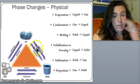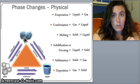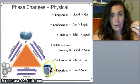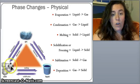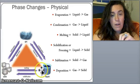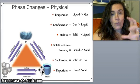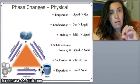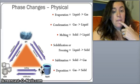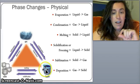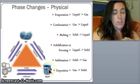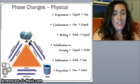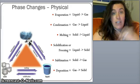Anytime you are going through the phase change pyramid, you're only doing a physical change — you're only changing the physical appearance of that substance. Matter is going through phases all the time, and the way you get through the pyramid is by either adding energy or taking energy out of it.